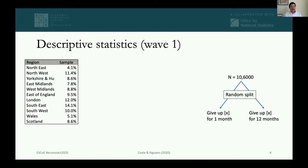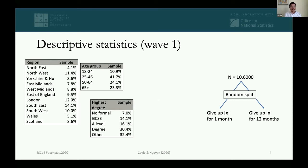We cross-checked descriptive statistics with ONS sources and they are largely in line with what we would expect. We checked across regions and age groups — the largest groups are between 25 and 46, then roughly a quarter each in the age groups above that. Around 30% have a degree, A-levels 16%, GCSEs 14%, and about 7% have no formal qualifications. These figures are roughly in line with what the ONS shows.